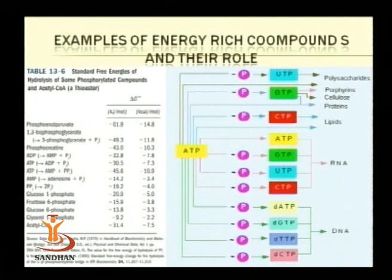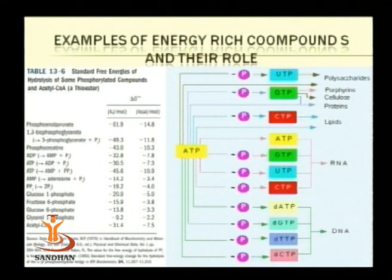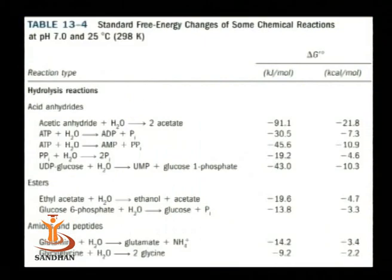From the table, you can also have a broad idea about the standard free energy change — that is, the value of delta G. Whenever such high-energy intermediates are hydrolyzed, the values of delta G for most of these compounds are negative, meaning that whenever such high-energy compounds are hydrolyzed, a certain amount of energy is released, which can be used by the cell for biosynthetic activities.